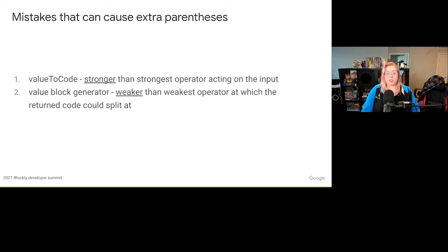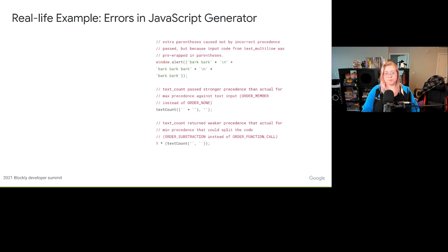As we reviewed our generated code, we've noted some similar mistakes in our repo and fixed them accordingly. We consider these mistakes in core to be especially bad because it makes it harder for contributors looking at our codebase as a source of truth on how to correctly write generator code.